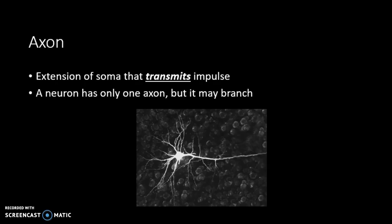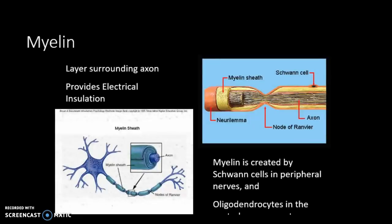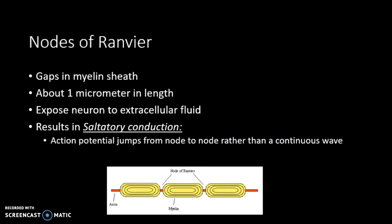The axon is the extension of the soma that transmits the impulse. A neuron has only one axon, but it may branch. Axons are surrounded by a myelin sheath — Schwann cells in the PNS, or oligodendrocytes in the CNS. Nodes of Ranvier are gaps in the myelin sheath about one micrometer in length that expose the neuron to extracellular fluid, resulting in saltatory conduction — the action potential jumps from node to node.